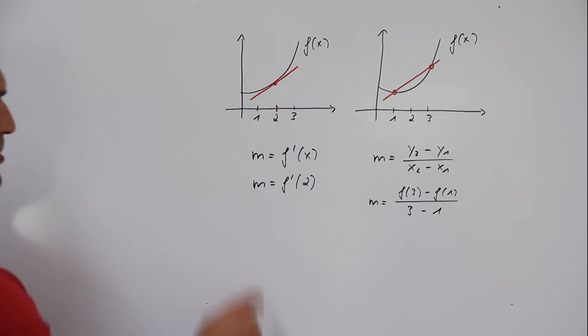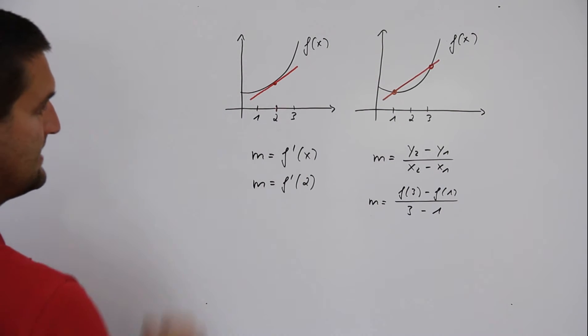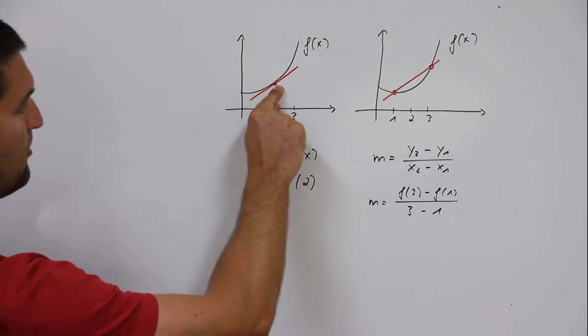The difference between the slope of a tangent and the slope of a secant. The tangent touches a function in only one point.